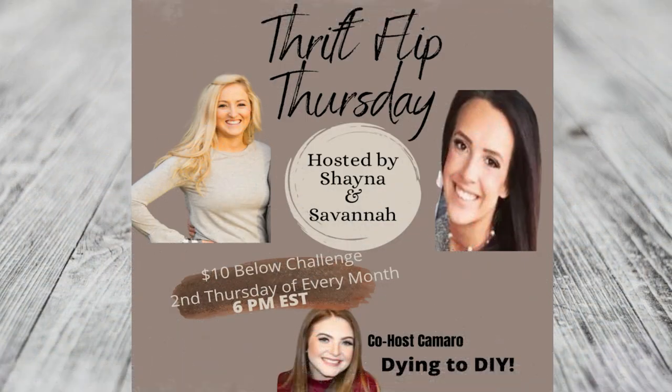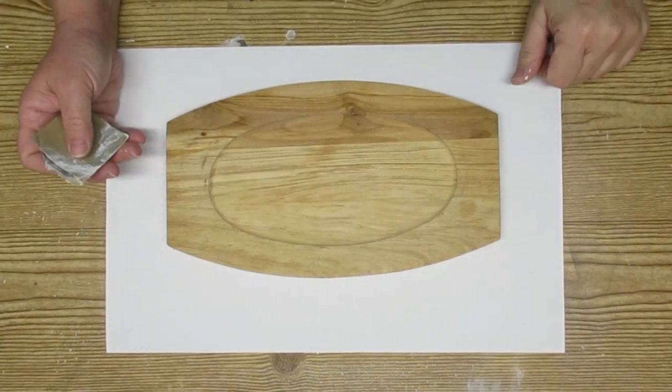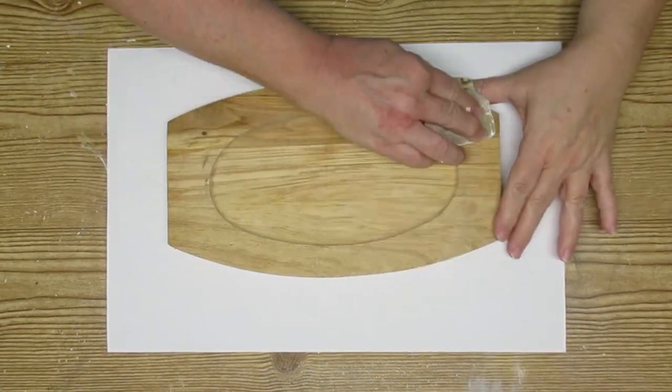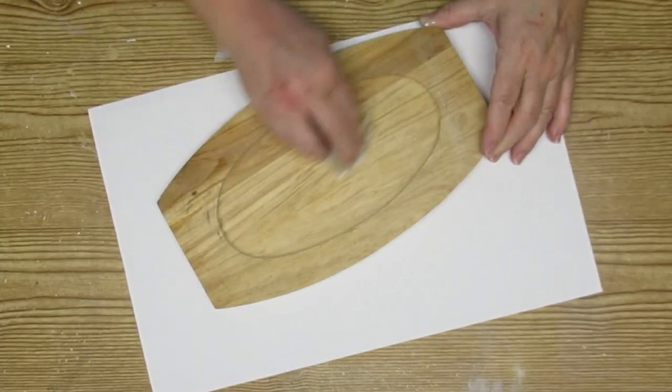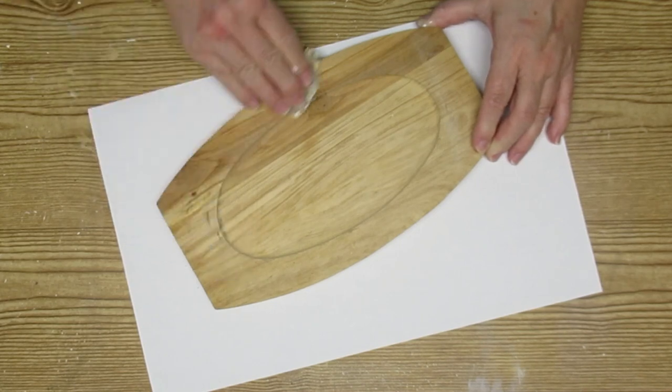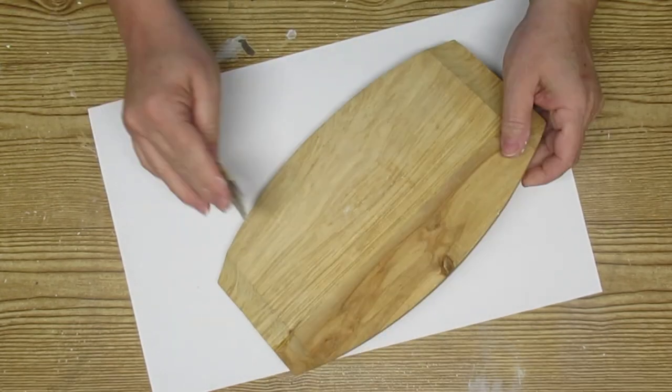Just a reminder that there will be a playlist link down in my description box. You're not going to want to miss out on all the super flips that everyone is going to create. This last flip is just using this board that I picked up for $1.99. I've had this in my stash for a really long time, I think over a year. I think it had some kind of lid to it at some point but I'm just going to give it a little bit of a sanding, get off some of those rough edges.